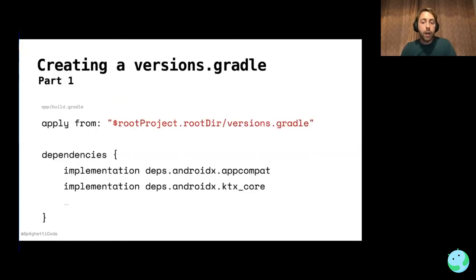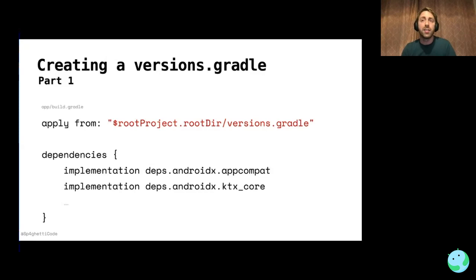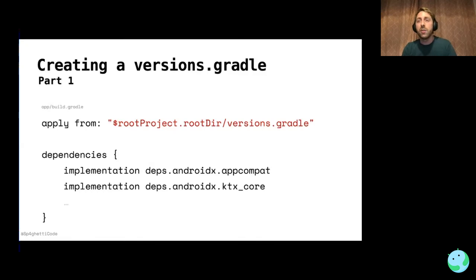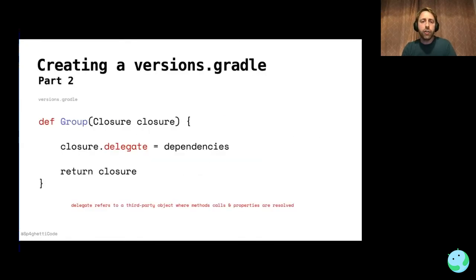I can then apply this versions file in my app-level build.gradle file, and without doing much, I have a much cleaner, centralized way of adding dependencies. No longer am I defining specific versions per module — it's a single source of truth throughout the application. But when you have a large number of dependencies, what if you want to import all dependencies for X — like all network layer dependencies or all testing dependencies? You don't want to copy and paste all the implementations. I found a trick using Groovy closures, which have something called a delegate — a third-party object where methods and properties are resolved.